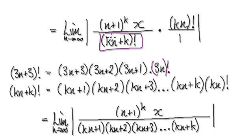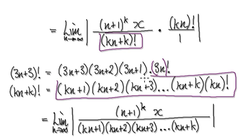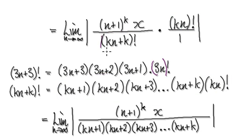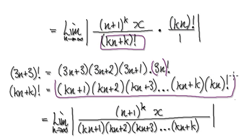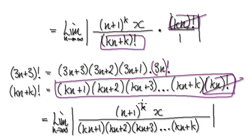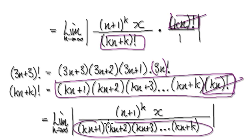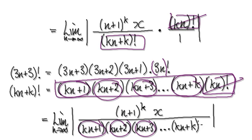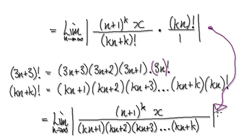So this whole thing here will then become this whole thing here. You can see that this will cancel out with this, leaving you with what's left from here to here. Visualize this bit here as being this whole thing here, and then this thing here will cancel out with this. So you're left with this — your first one, second, third, and so on, all the way to kn plus k. So that will then take you from here to here.